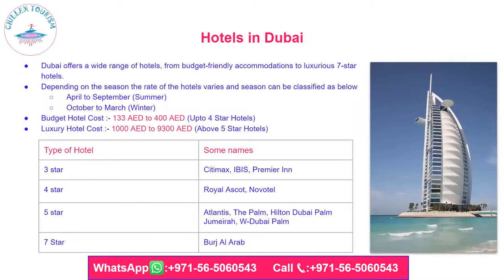Dubai offers a wide range of hotels from budget-friendly accommodations to luxurious 7-star hotels. Depending on the season, hotel rates vary. Season classification: April to September is summer, October to March is winter. Budget hotels up to 4 stars cost between 133 and 400 dirhams per night, while luxury hotels cost from 1,000 to 9,300 dirhams.